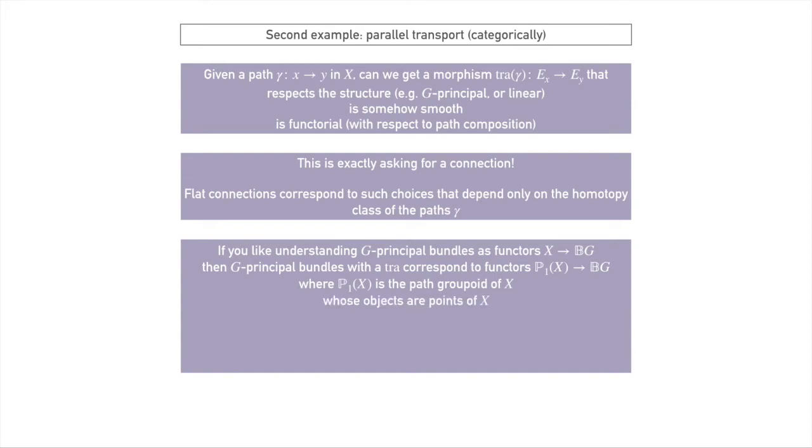Where P₁(X) is the path groupoid of X. This is the groupoid whose objects are points of X and the morphisms are so-called thin homotopy classes of paths with sitting instants. Here, 'thin' means that if we pull back some two-form, we get something that's zero. So thin kind of means that in the analytic structure we don't see anything above one dimension, which is what you'd hope if you're looking at paths. And 'sitting instant' means that the paths are locally constant at endpoints.